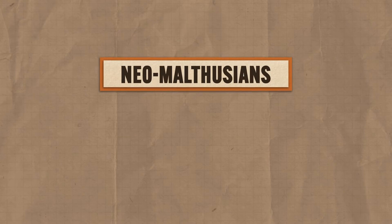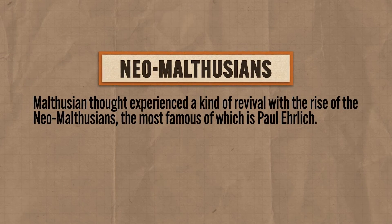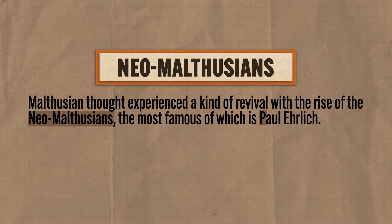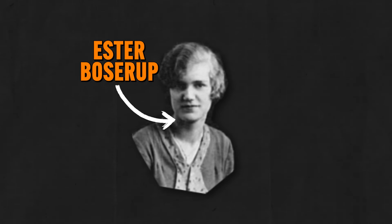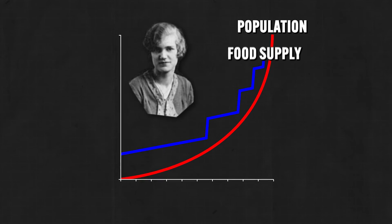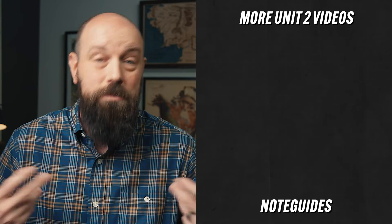Just because Malthus was basically wrong doesn't mean his theory doesn't still have influence. In fact, around the middle of the 20th century, Malthusian thought experienced a kind of revival with the rise of the Neo-Malthusians, the most famous of which is Paul Ehrlich. He essentially argued along the same lines as Malthus, saying that we were rapidly approaching the point of apocalyptic misery — but we haven't. One of the most significant critiques of Malthusian theory came from economist Esther Boserup, who argued that the rate of food production was directly proportional to the rate of population growth. In other words, when populations grow, they are going to find a way to innovate and feed themselves, and that seems to be how it's gone.